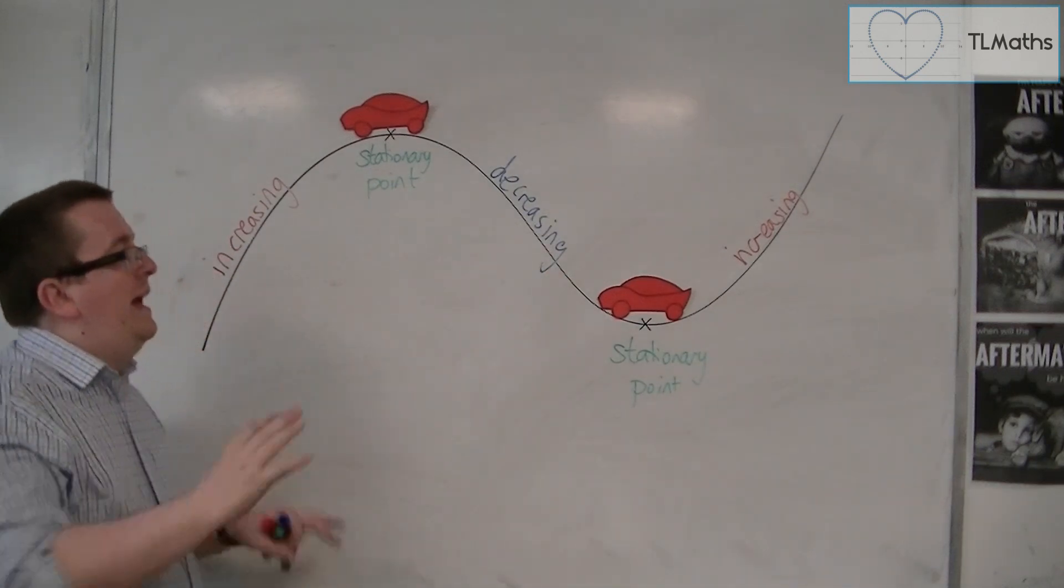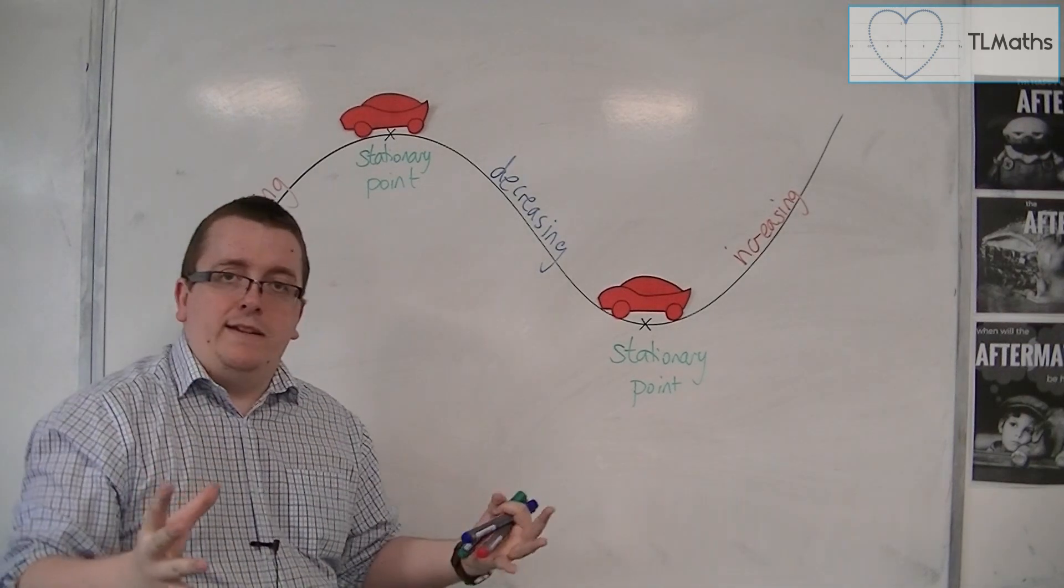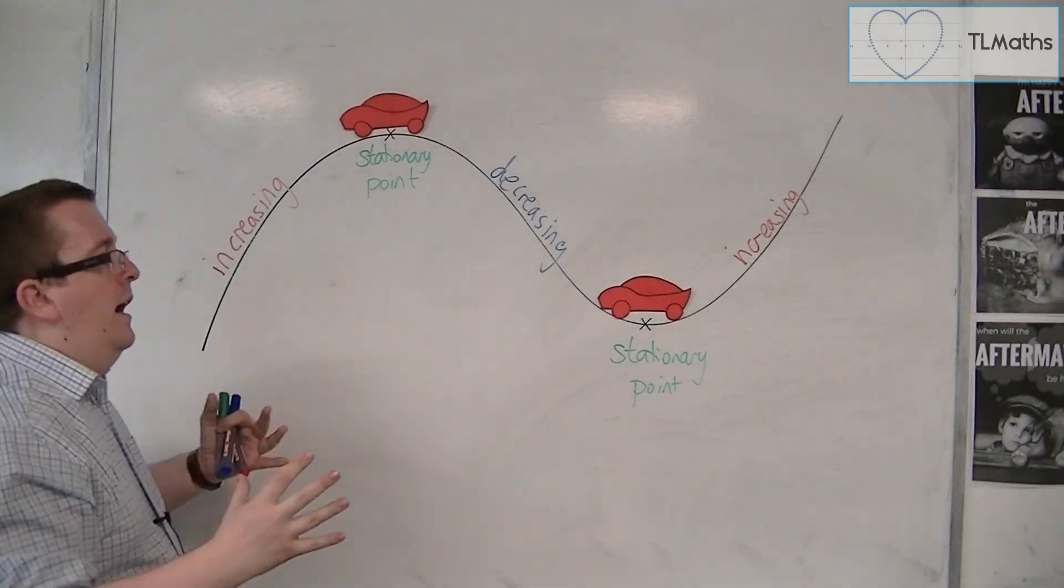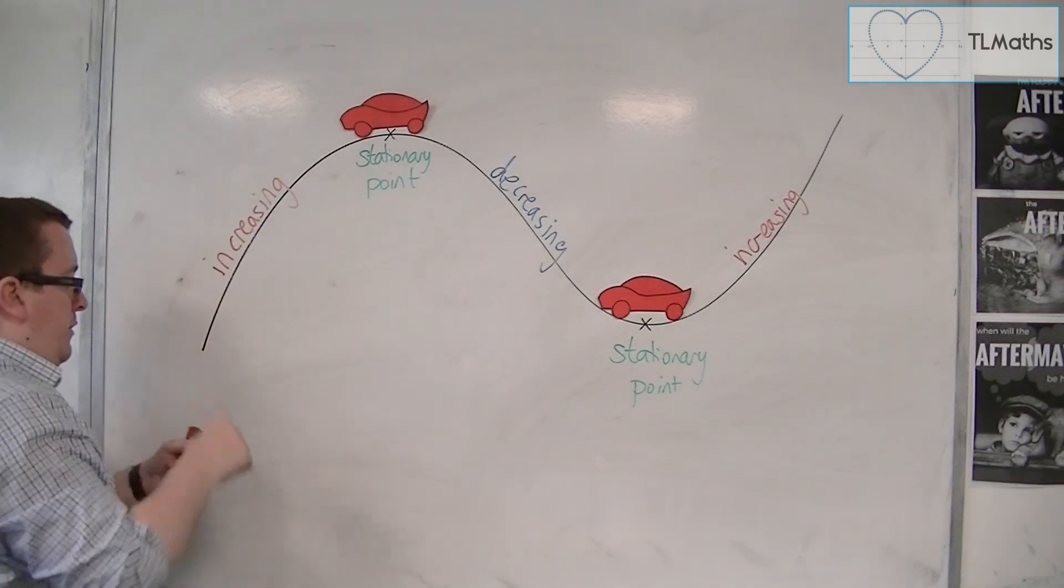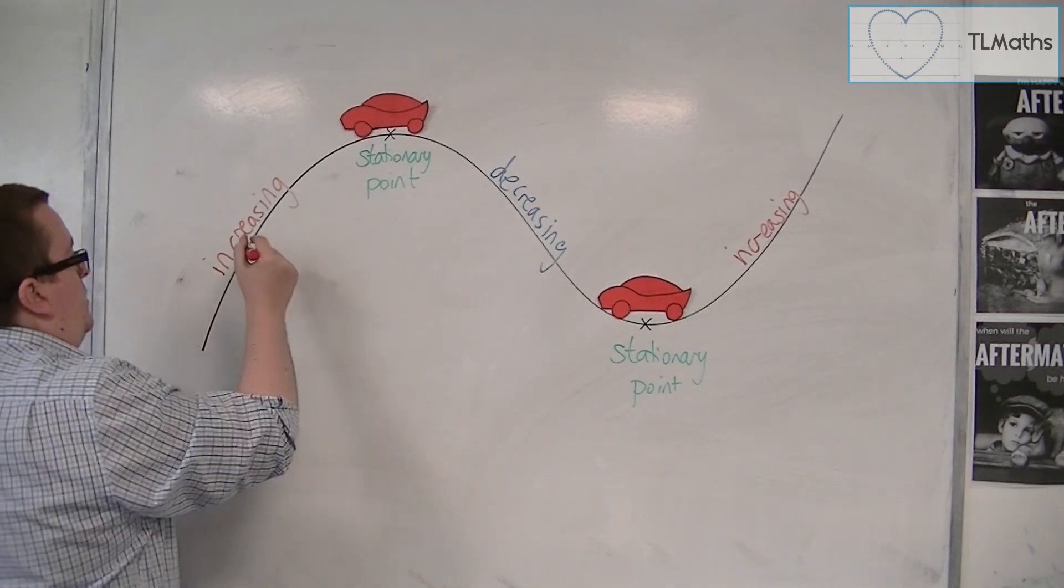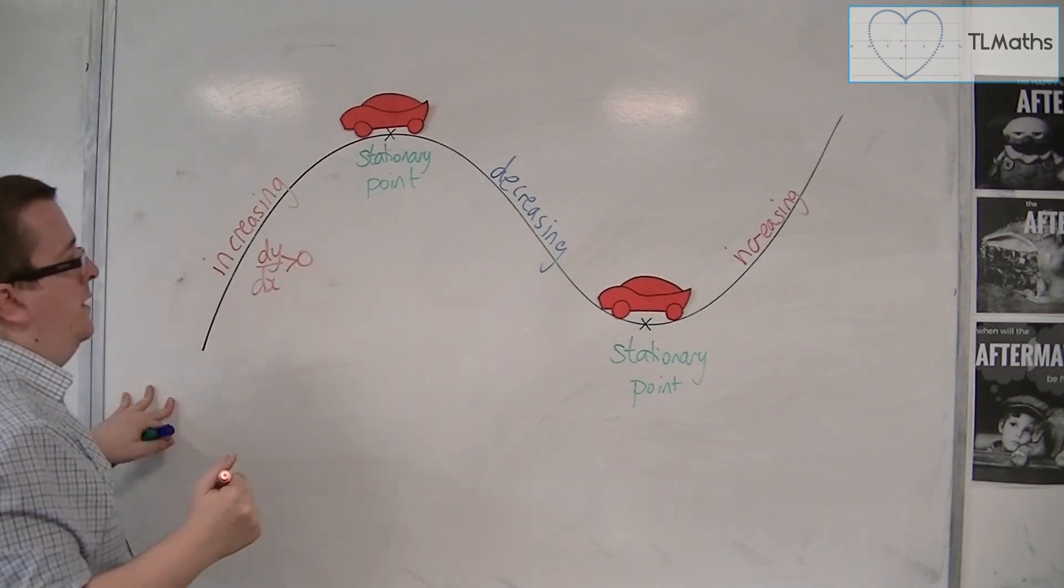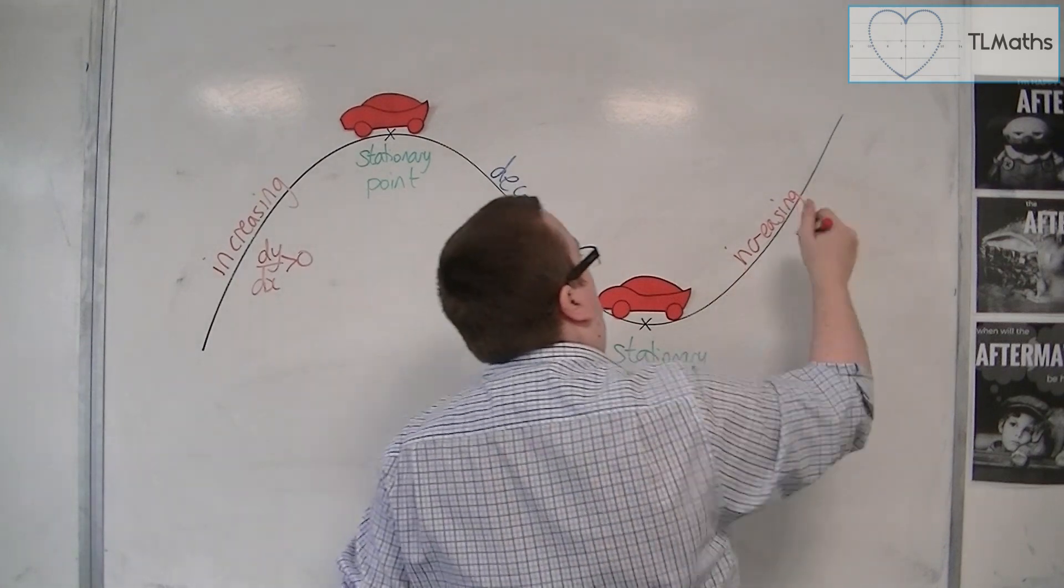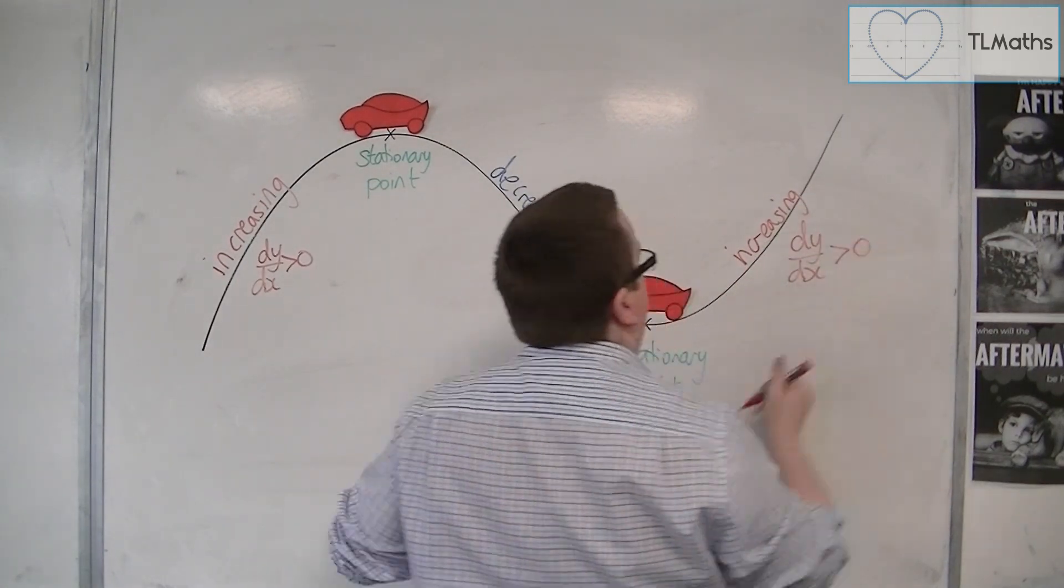Now, I also identified that at these regions, the gradient of the curve is specifically, when it's increasing, it's positive. So we could write that dy by dx at this point is greater than 0, and at this point as well. So dy by dx is greater than 0.